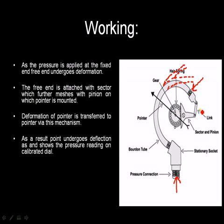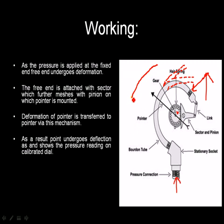Now as you can see, the free end is attached to the link which is further added to this sector. The sector is further meshed with this pinion, and on the pinion, the pointer is mounted. So what happens is this movement of this free end in the upper direction is transferred to the link, which further transfers to the sector. Now this sector, as it is meshed with this pinion, this movement of this free end is finally transferred to this pinion. The pinion undergoes rotation, and as the pointer is mounted on this pinion, the pointer also undergoes deflection.